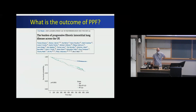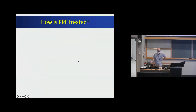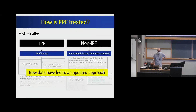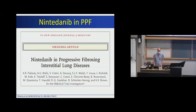Looking at outcomes of progressive pulmonary fibrosis in a UK cohort: patients with IPF have a poor prognosis over time, and patients who have other subtypes of pulmonary fibrosis meeting progressive criteria have an outcome similarly poor to IPF. If you don't have this progression, unsurprisingly you do better. This brings us to how progressive pulmonary fibrosis is treated, using data from recent clinical trials.